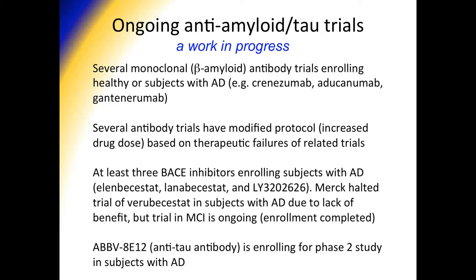The anti-amyloid therapies are still very much a work in progress. Several monoclonal beta-amyloid antibody trials are enrolling healthier subjects with AD, including crenezumab, aducanumab, and gantenerumab, and several have modified their protocols with increased doses based on prior therapeutic failures. There are also BACE inhibitor studies — inhibitors of the beta-secretase enzyme that cleaves beta-amyloid — still enrolling subjects. One study by Merck failed in AD but is still doing the trial in MCI. Anti-tau antibodies are now enrolling for phase 1 and phase 2 studies, which is quite exciting.